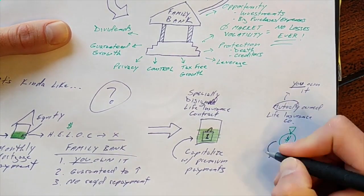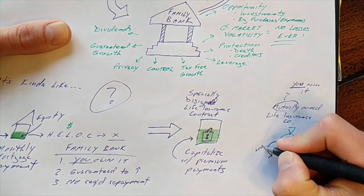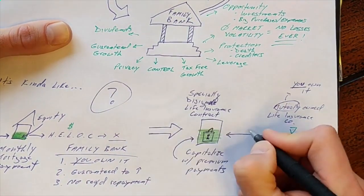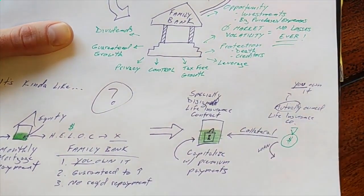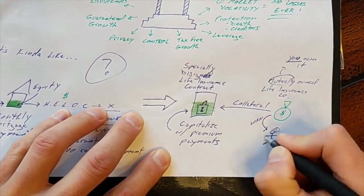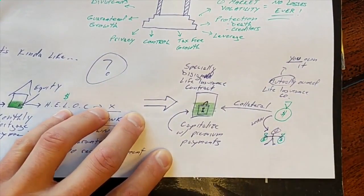Now, when you want to access your cash value, you take a loan from the other pot of money and collateralize it with your cash value. No questions asked. You can spend that money however you see fit. And then you create your own repayment schedule.